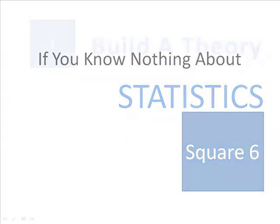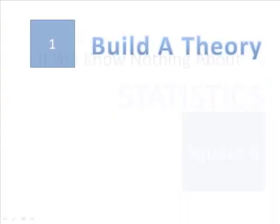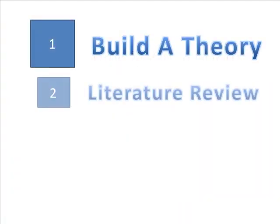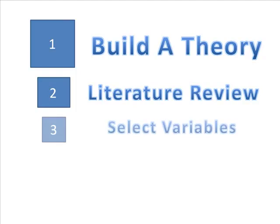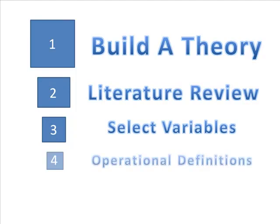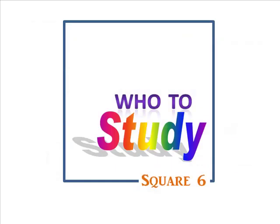In square one, you started with a theory and worked your way through the process. You selected your variables, picked a hypothesis, and in square five, you decided to conduct an experiment. When you're in the process of choosing who to study, you're in square six.